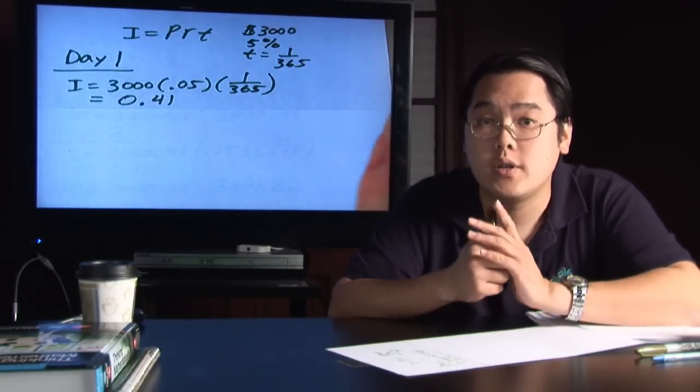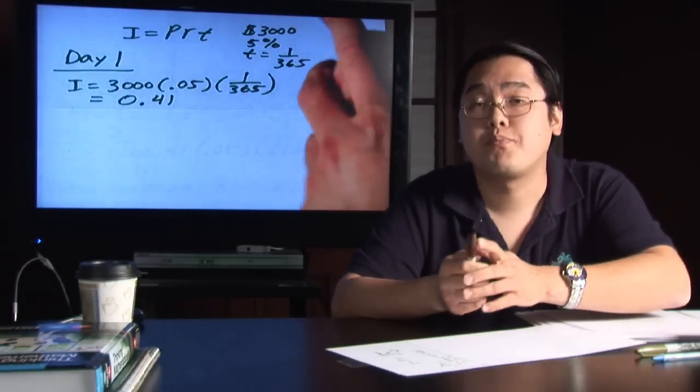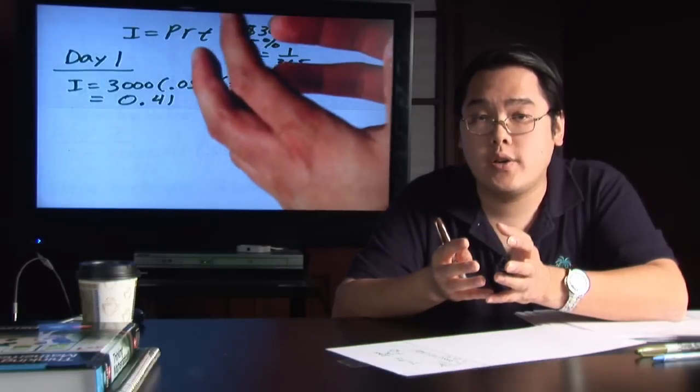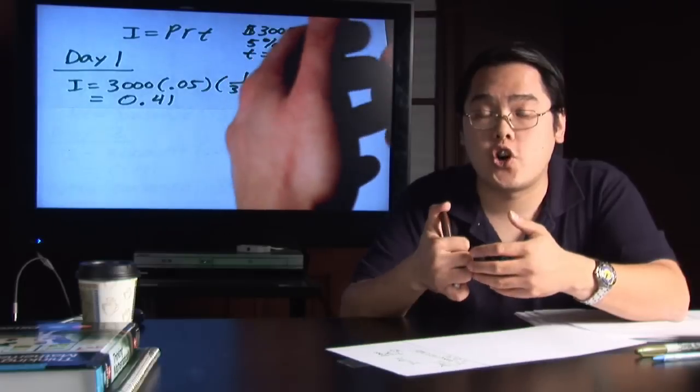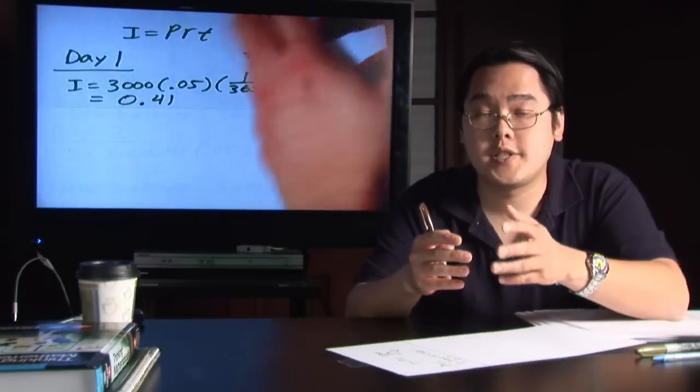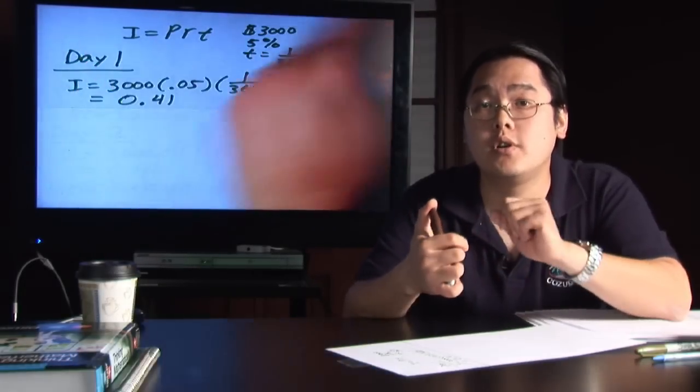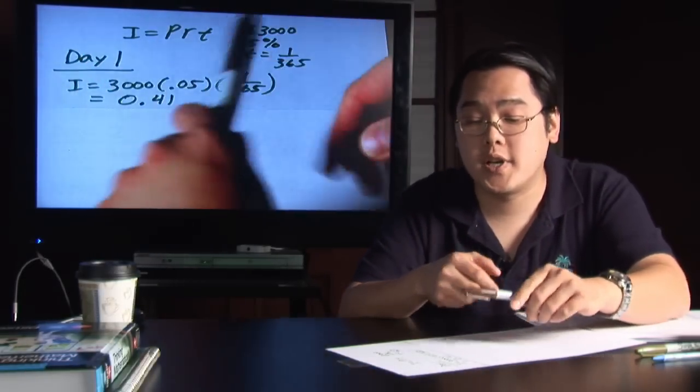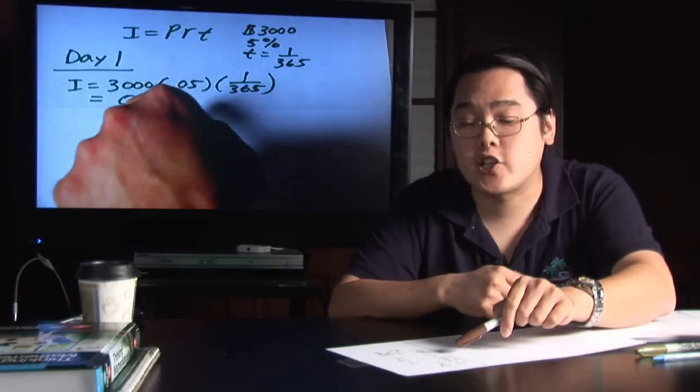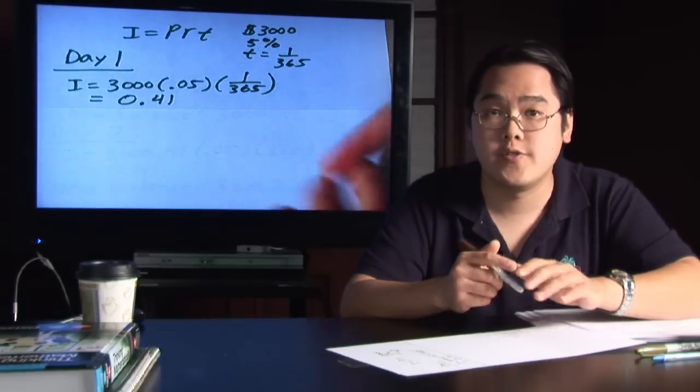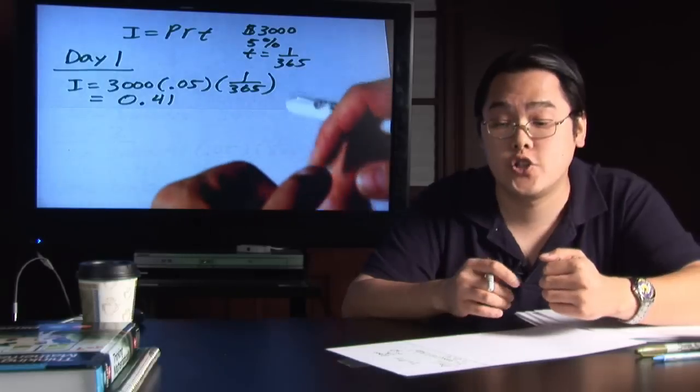But how do you figure out what day two is? Well, since you're calculating interest, interest that you earn is interest plus principal, so what you want to do is because you already have 41 cents at the end of the first day, you actually need to add it to the 3,000 to figure out how much interest you're going to earn for day two.